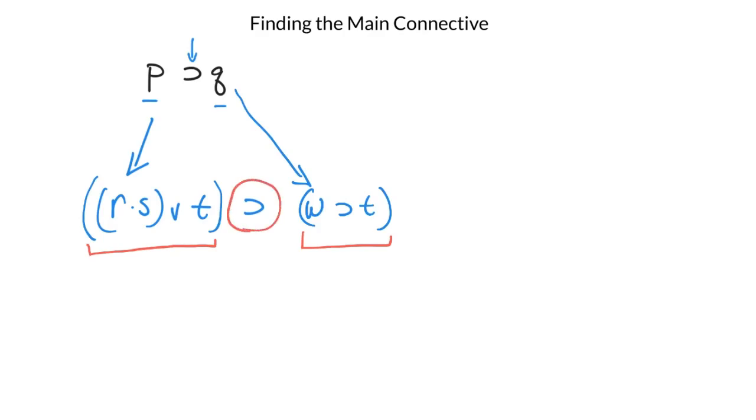Now if someone were to throw in an extra set of parentheses, which you'll often see in the book, something like this, well that doesn't actually change the grouping inside. What this tells me is that this entire thing is one big expression. So this is the whole expression just like this whole thing is one expression.